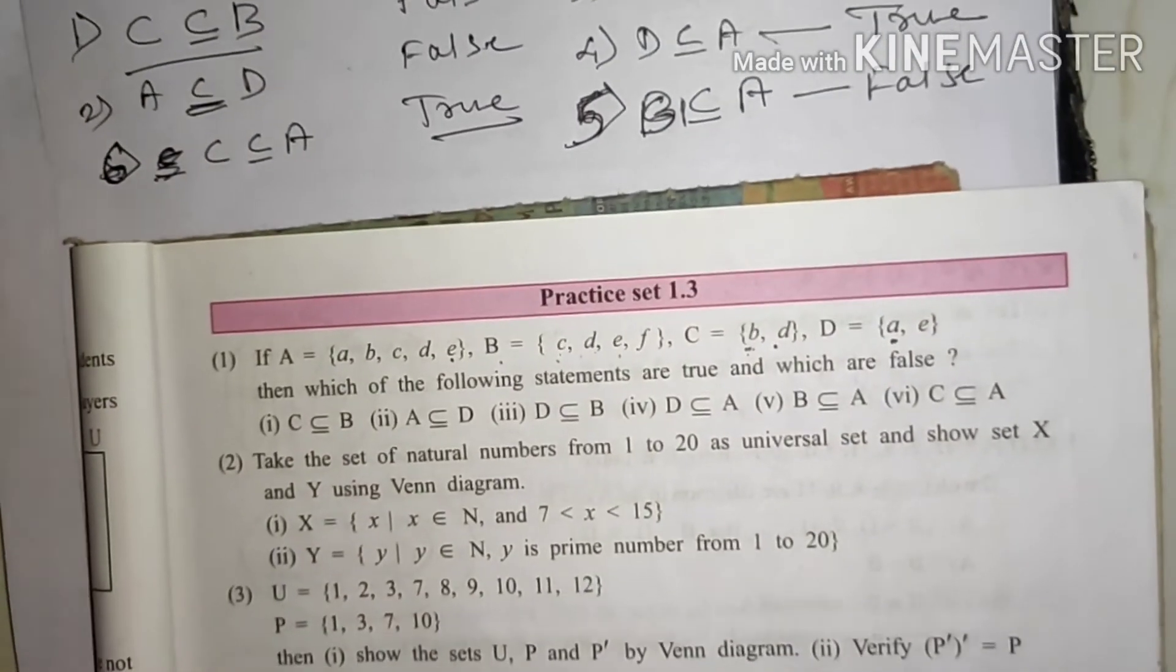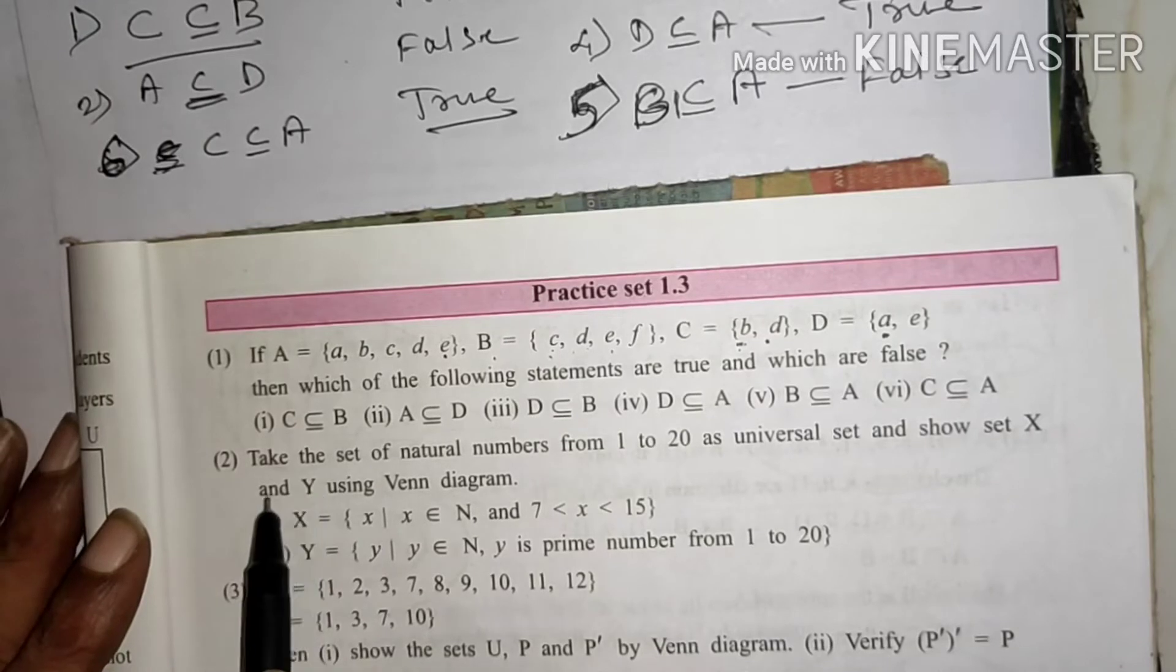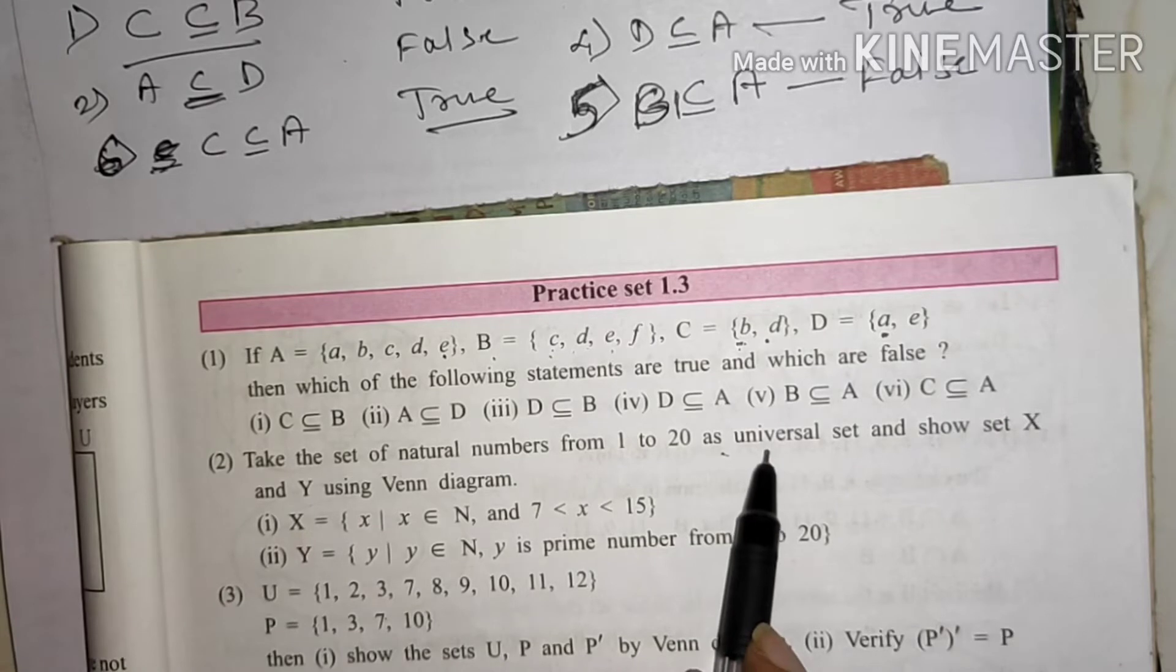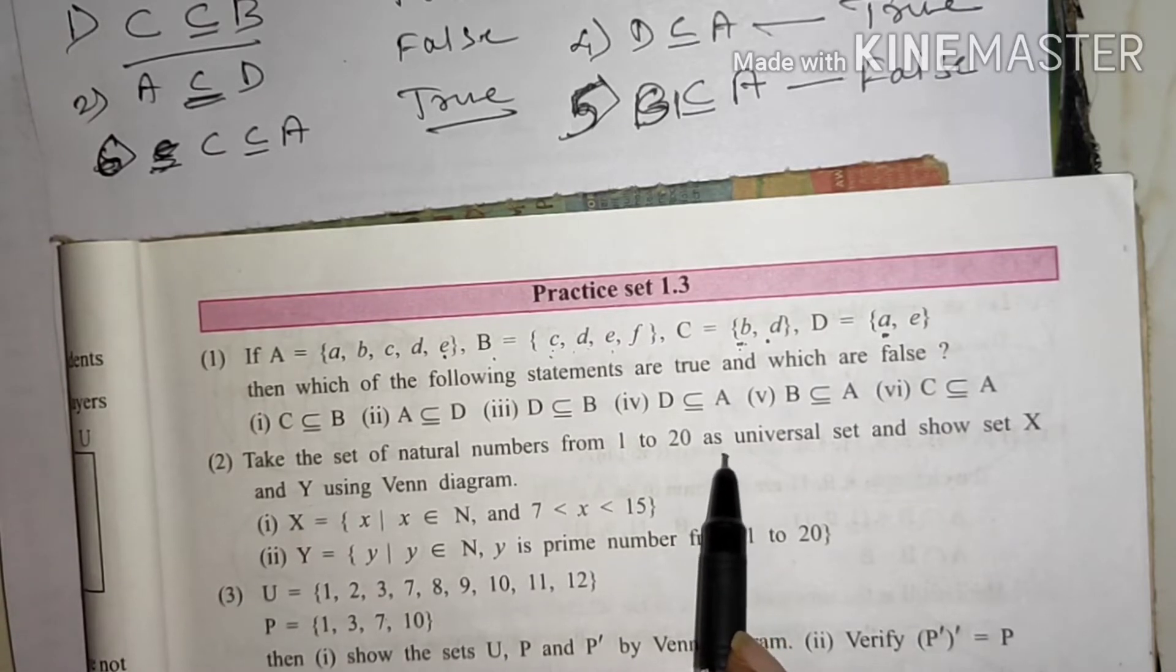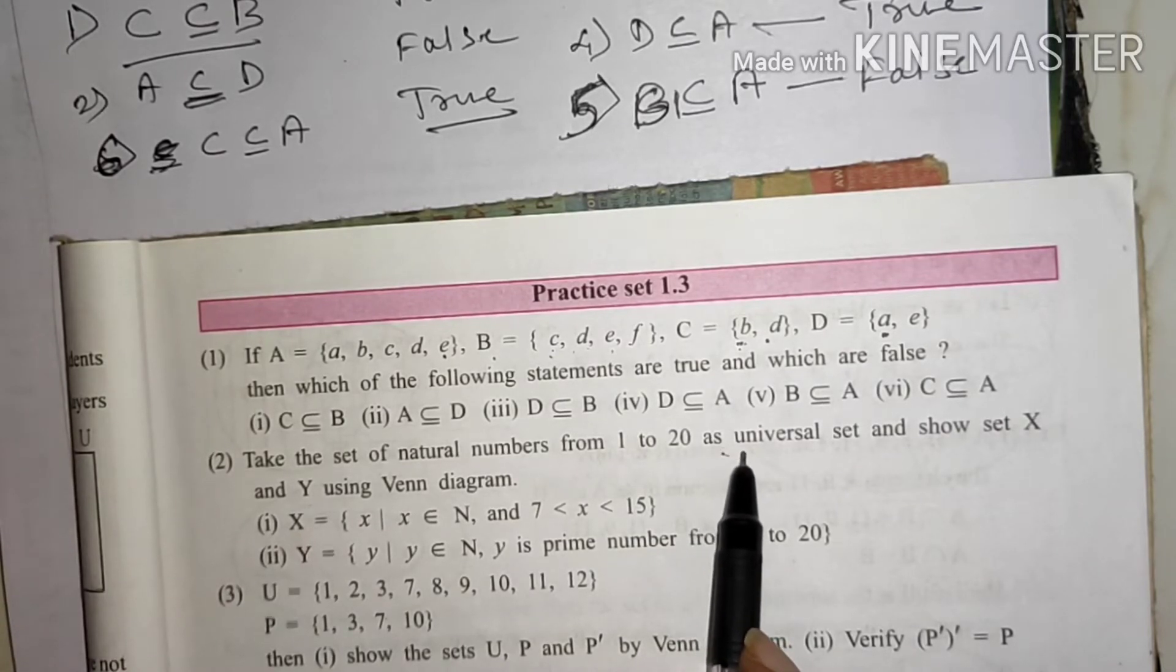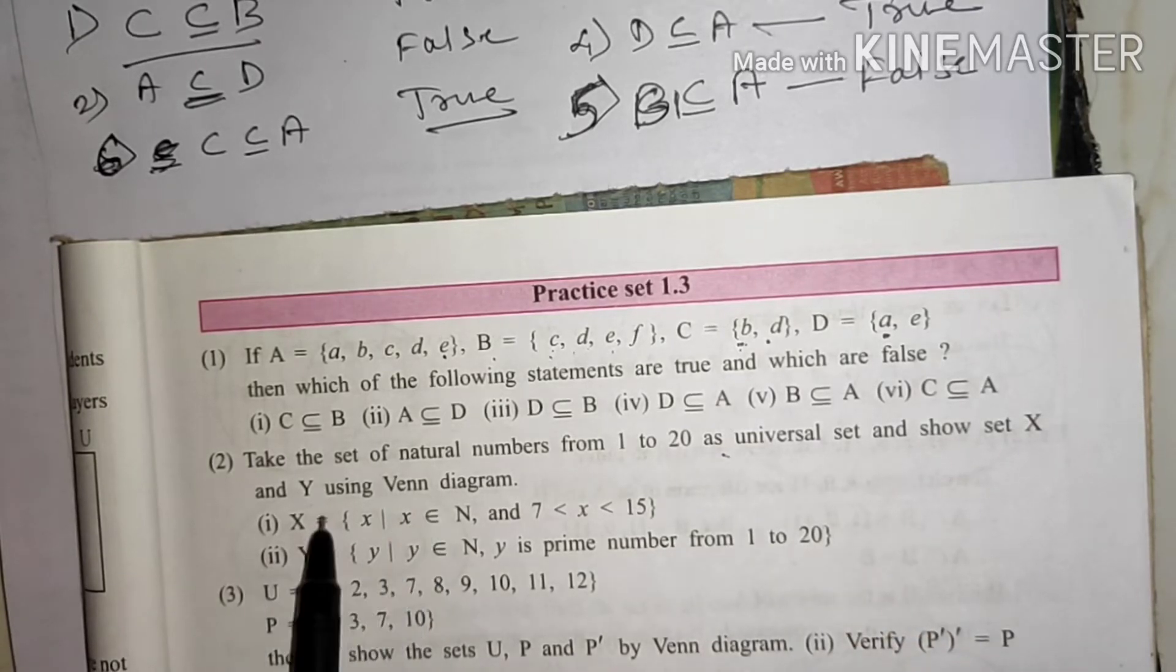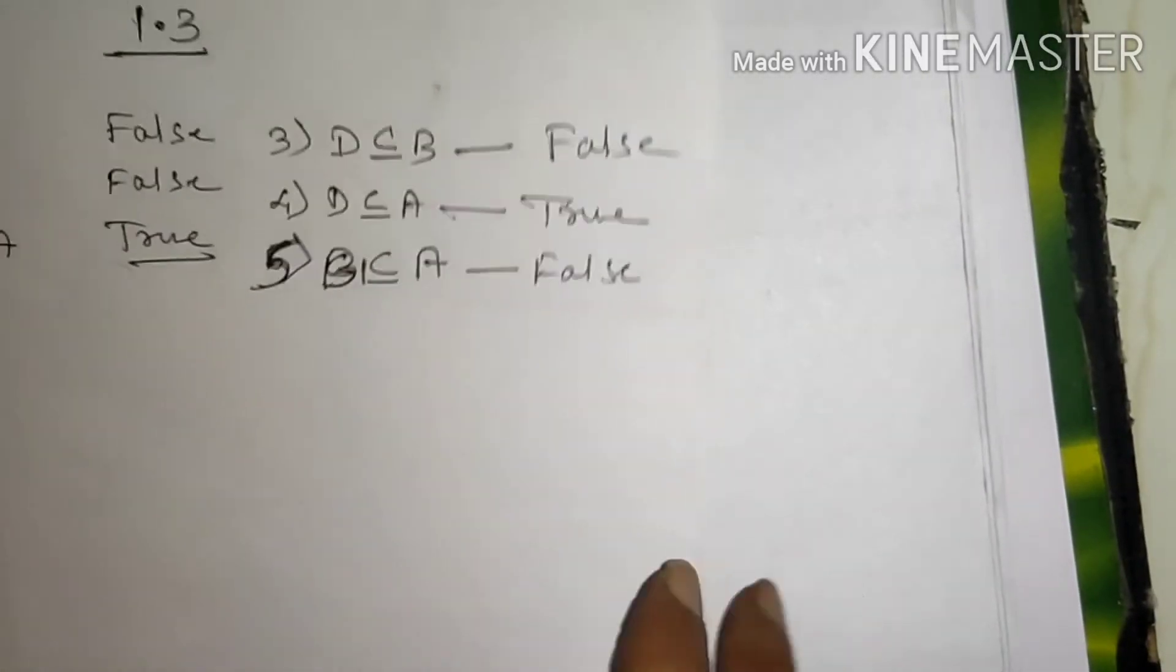Next one, question two. Take the set of natural numbers from 1 to 20 as universal set and show X and Y using Venn diagram.